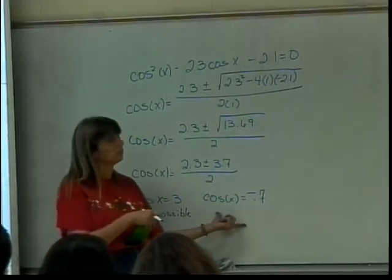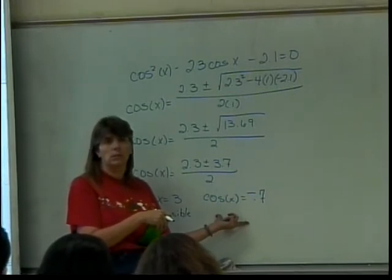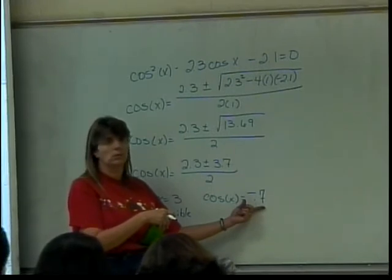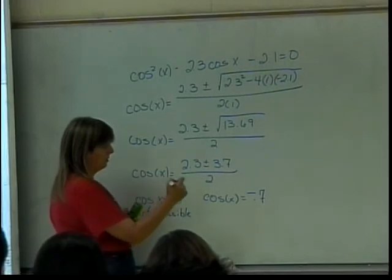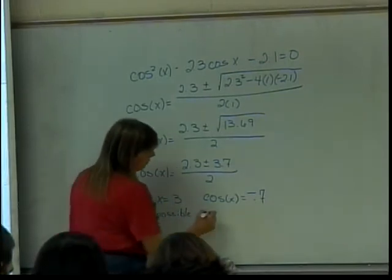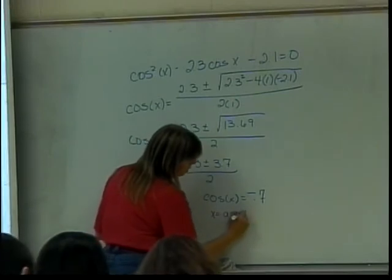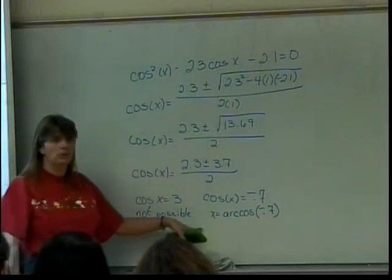What about this one? What do I do to it? Remember what I did when it was just negative 1/4? What did I do? Right. So the inverse cosine. So x is equal to the arc cosine of negative 0.7. That's one of my answers.